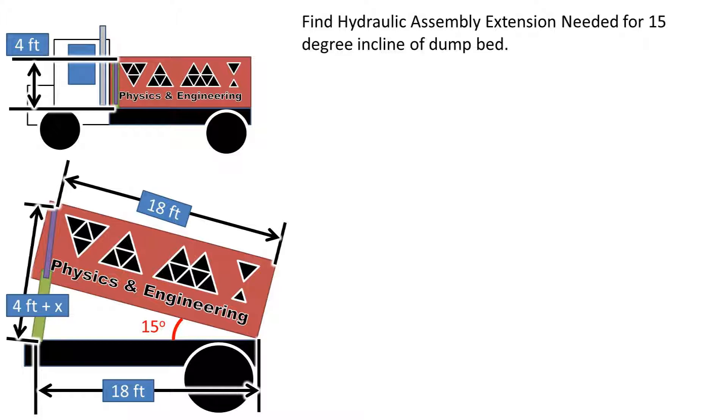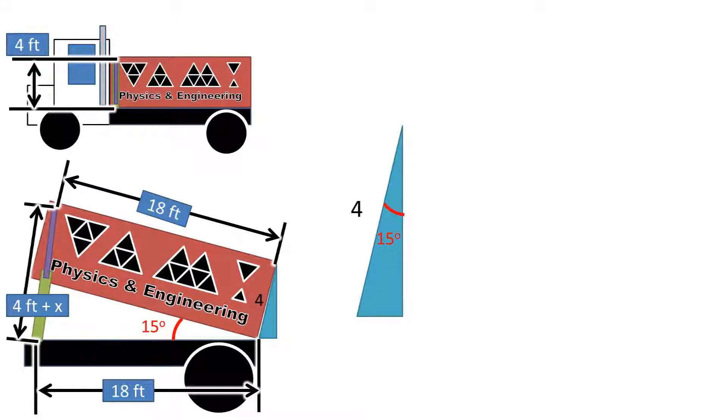We need to make this problem into a big triangle. To do so, we must will some right triangles into existence at the back of the bed. First, we can make a right triangle by using the initial height of the hydraulic system as the hypotenuse of the triangle, which is 4 feet. The angle is the angle of the bed, which is 15 degrees.